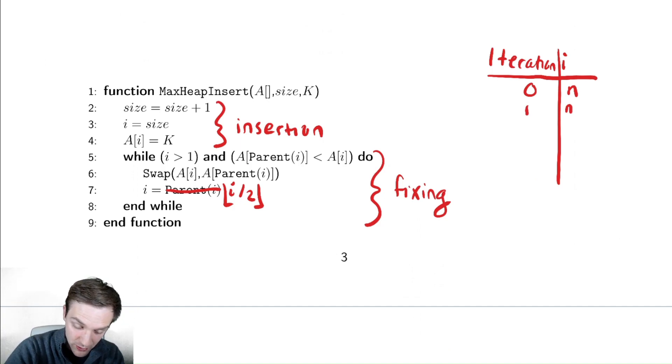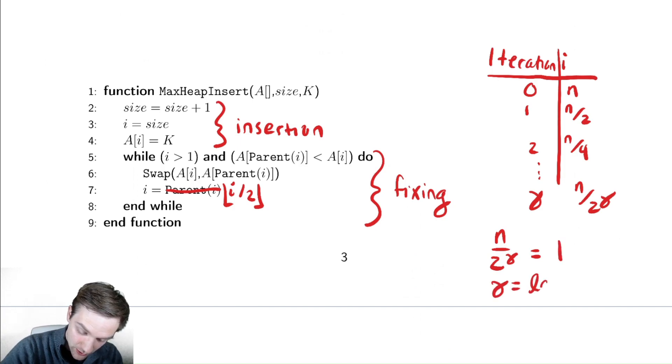But then we have after one iteration, we're going to divide it by two. After two iterations, we're going to divide that by two. After gamma iterations, we're going to have n over two to the gamma. When does this stop? Well, it would stop when n over two to the gamma is equal to the stopping condition of one, which is gamma equals log base two of n. And conveniently, we already know that that is an expression for the height of the tree.